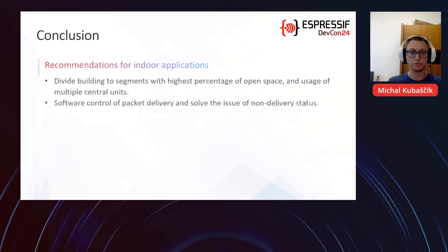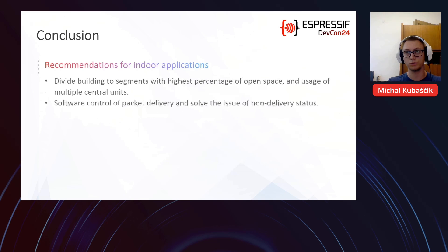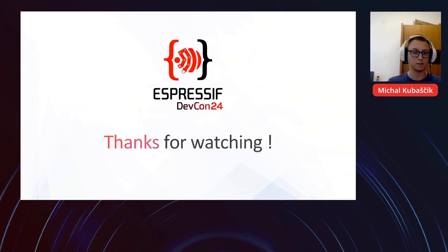Some recommendations for indoor ESPNOW applications: divide the building into segments with the highest percentage of open space, consider using multiple central units that can also communicate via ESPNOW with directional antennas. Implement software control of packet delivery and handle non-delivery status in firmware. Thanks for watching.